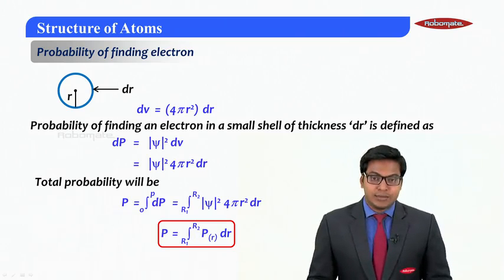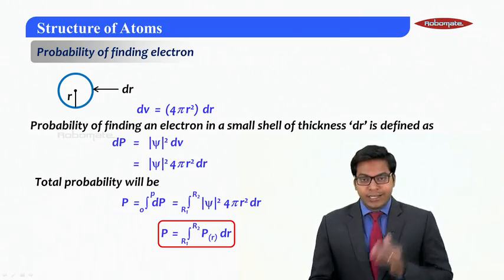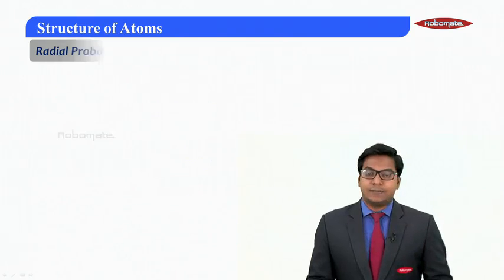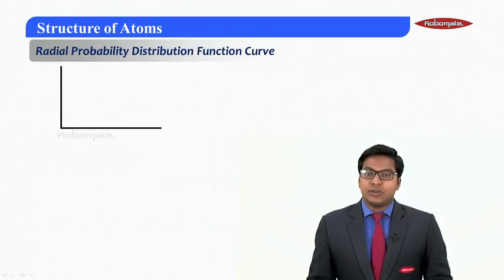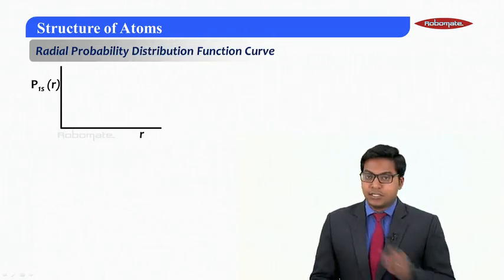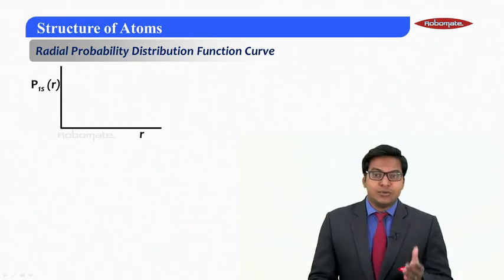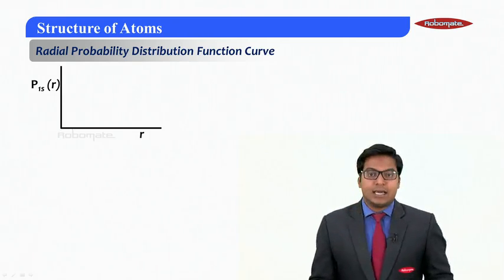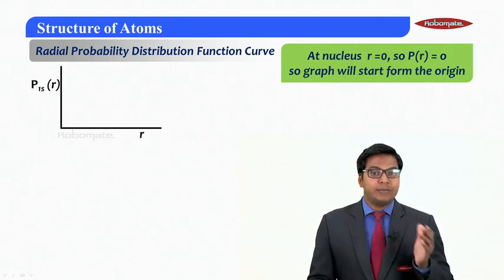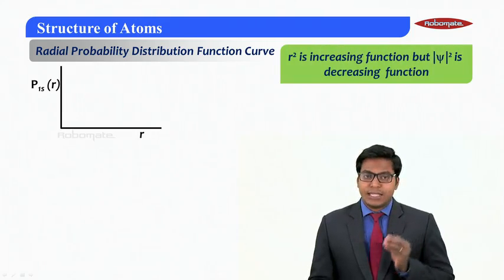Continuing this, now we will try to draw the total probability versus r. If I draw the probability distribution function P(r) versus r, now at nucleus r is equal to 0, so P(r) will be 0. So the graph will always start from the origin.